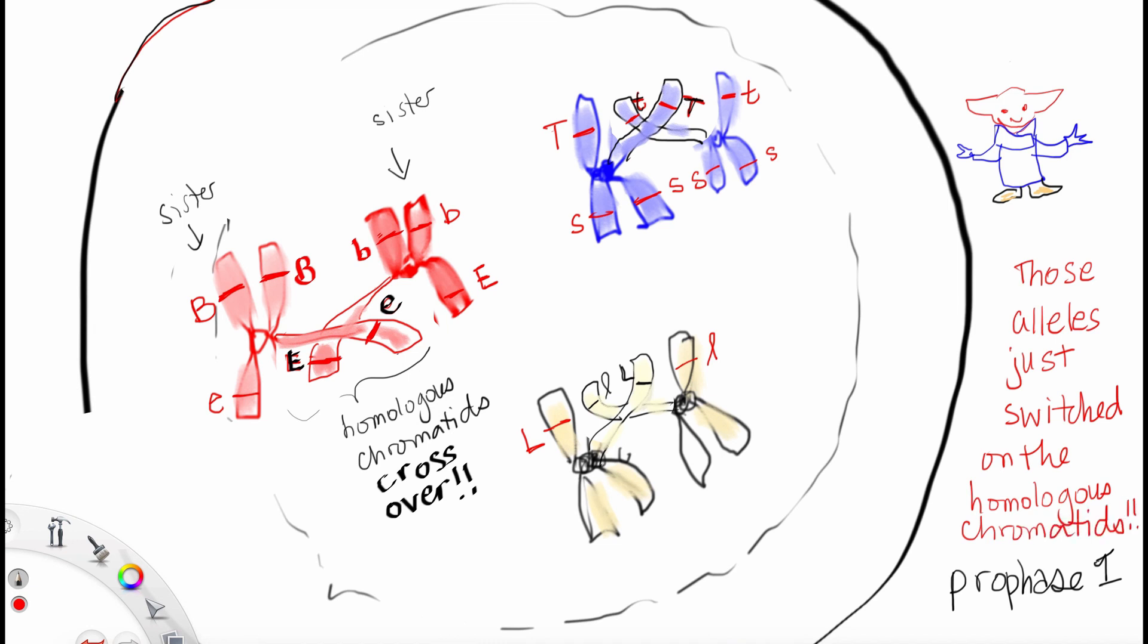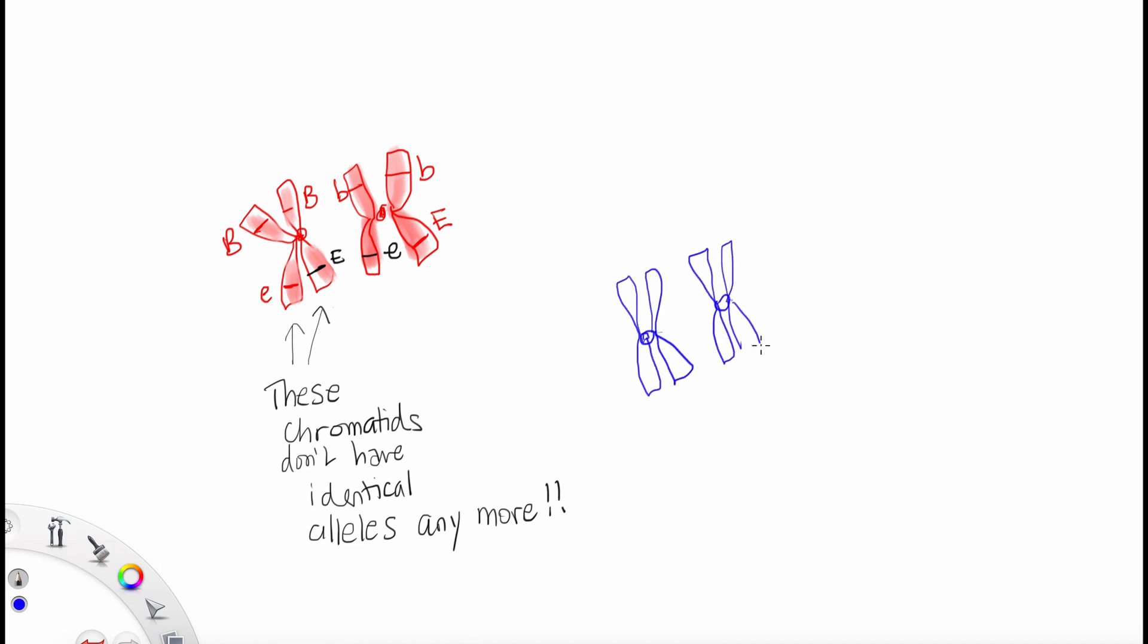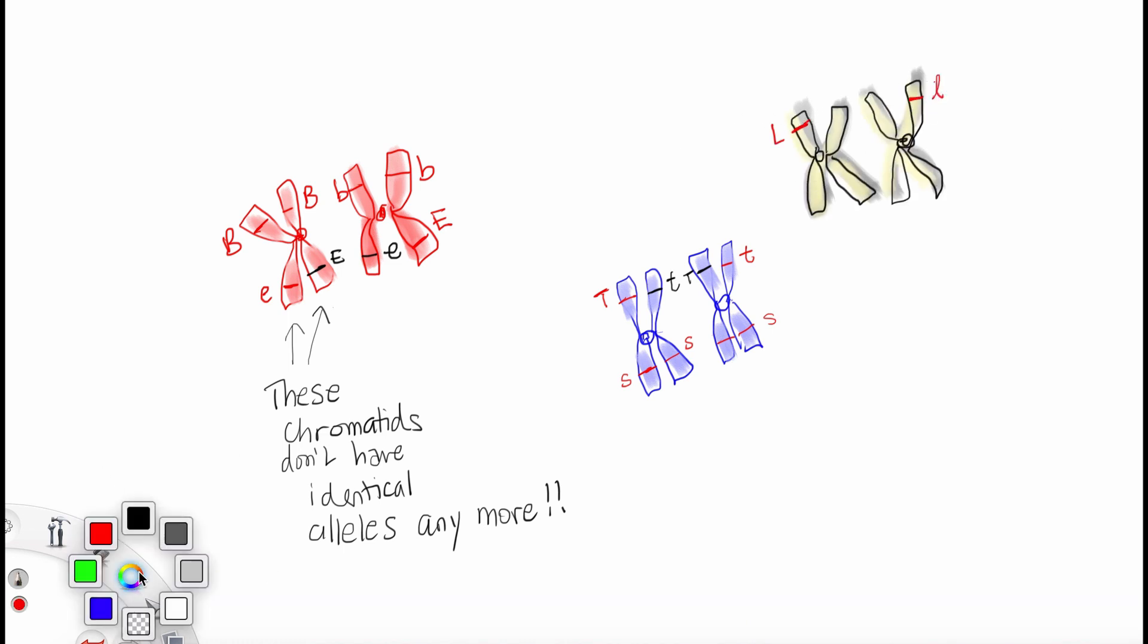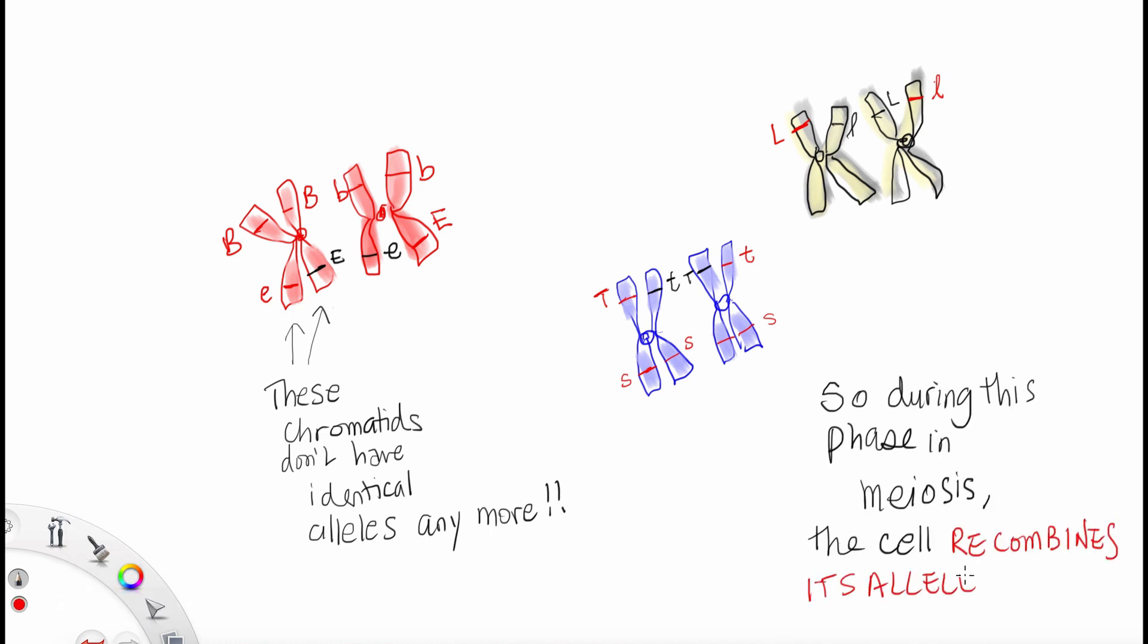So what they do is, they rip off pieces of themselves, and then they reattach. And after they reattach, those sister chromatids aren't identical anymore. Take a look at the alleles that are in black. We've now switched alleles. So these chromatids don't have identical alleles anymore. So during prophase 1 of meiosis, what the cell does is it starts swapping its alleles. They actually recombine their alleles, which creates great genetic variation.